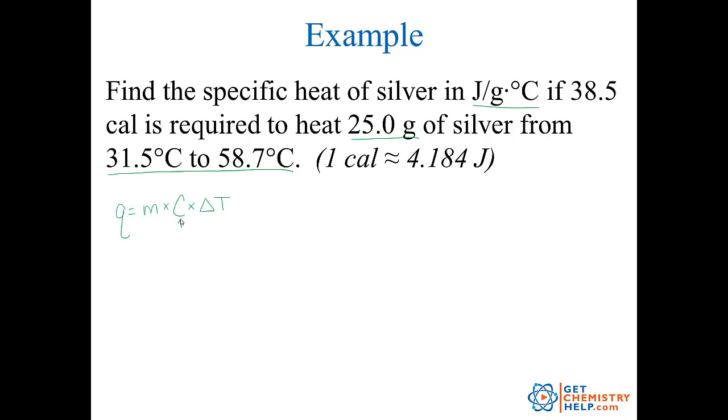So Q equals MC delta T. We need to solve for this variable C. So I have to get C by itself. So I need to get rid of M and delta T. So I'm going to divide both sides by M delta T. So M delta T divide by M delta T. So I get rid of my mass, my delta T. So that leaves me with C equals Q divided by M delta T.